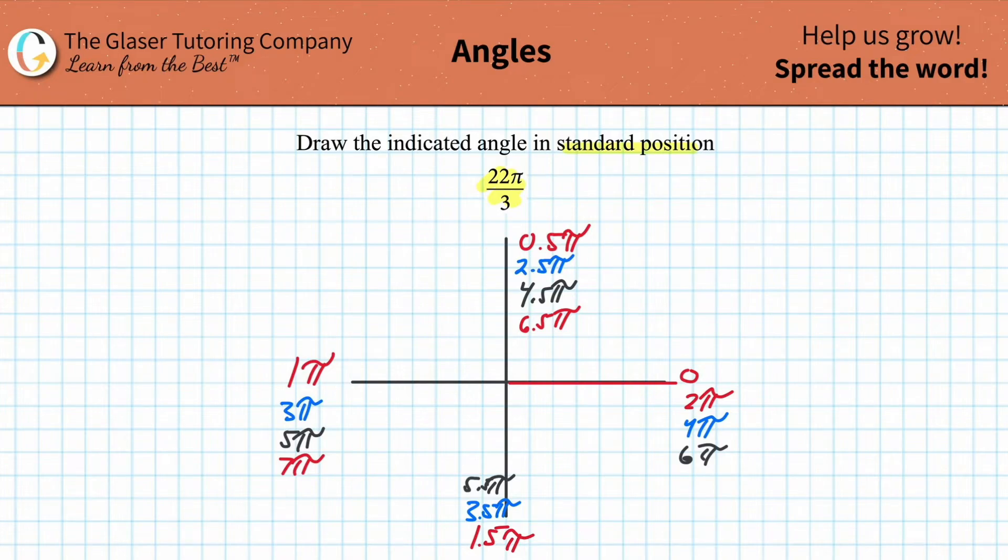Now, for this problem, we could probably stop there. So watch. What I'm going to do is convert this into a decimal. So just take out the calculator. Or you can estimate it. 3 goes into 22 about 7 and 1/3 times. 3 goes into 21 seven times, and then it goes into the remainder 1 about a third of a time. So this is about 7.3 pi.